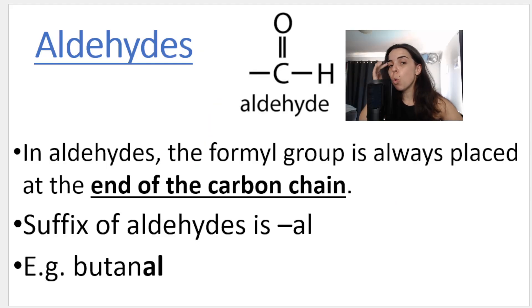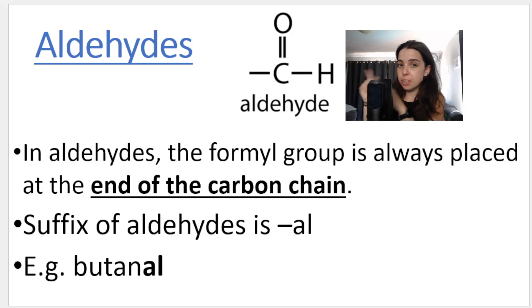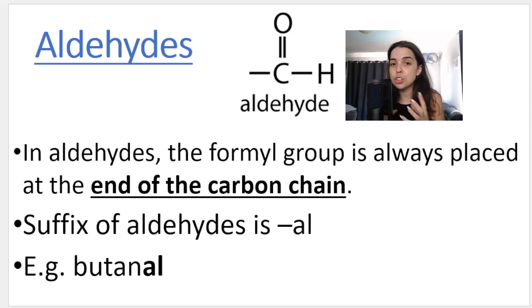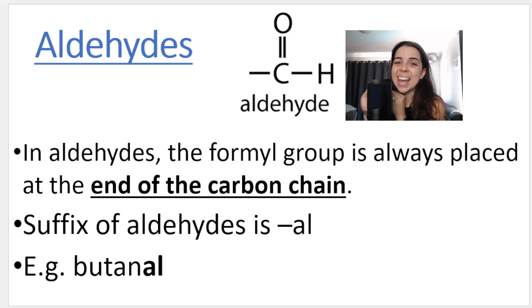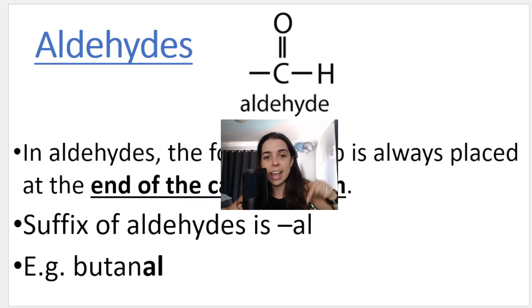This functional group is called the formyl group. So if I ask you what is the name of the functional group of aldehydes, you're going to say a formyl group. If I ask you to draw the structural formula of the functional group of an aldehyde, you draw all the little bond lines of the functional group. This is the functional group of an aldehyde, and it is always at the end of a carbon chain. The name of an aldehyde always ends in AL.